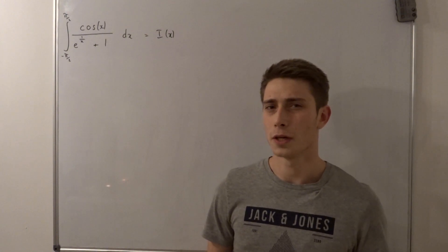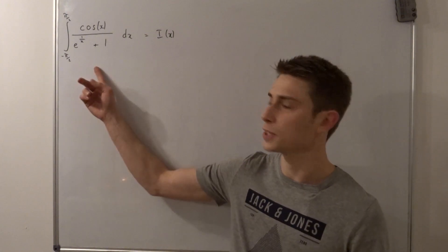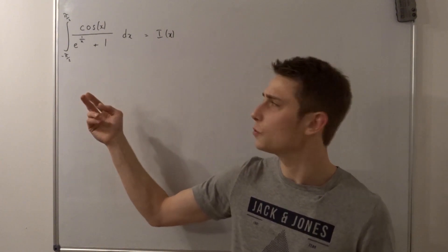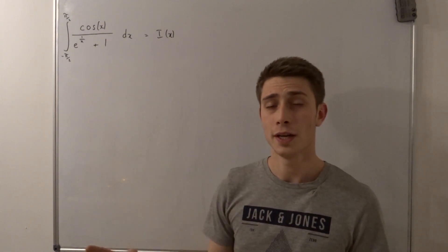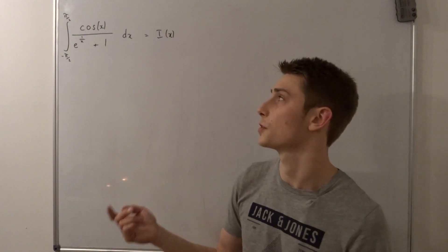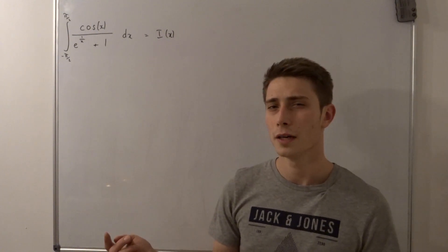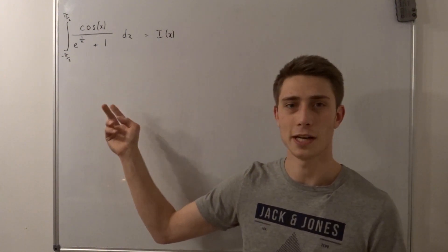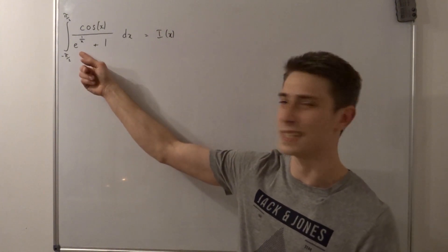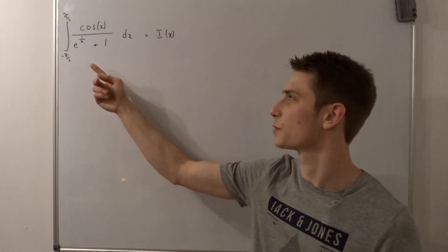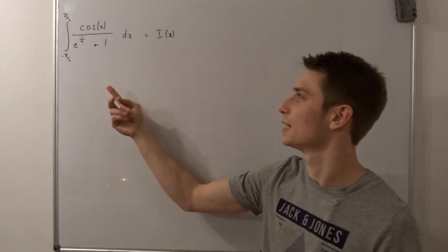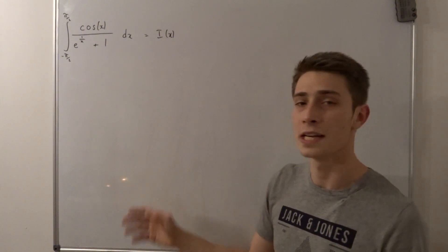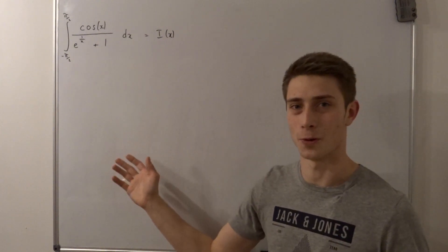In today's video we are going to take a look at the symmetric integral from minus pi half to pi over two of cosine of x over e to the one over x plus one in terms of x. Okay that looks absolutely terrible. That looks completely unsolvable because we got this exponential function with the weird exponent and a cosine and that just looks fucking ridiculous.